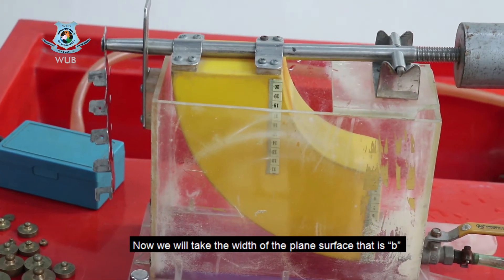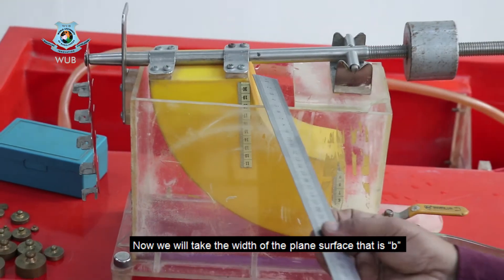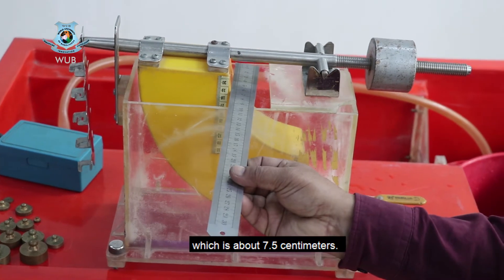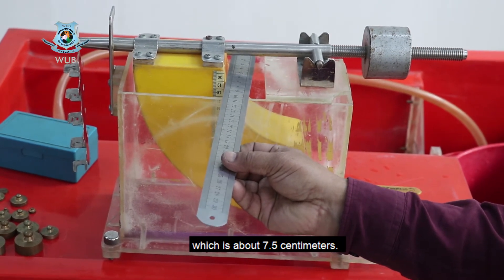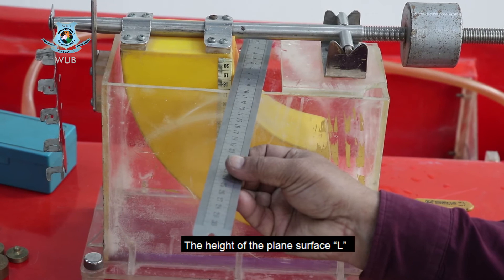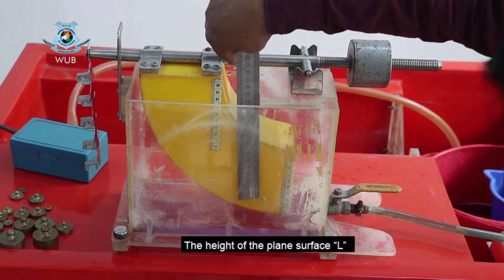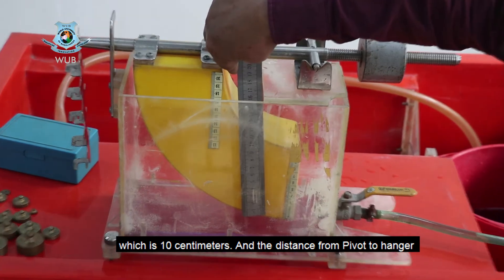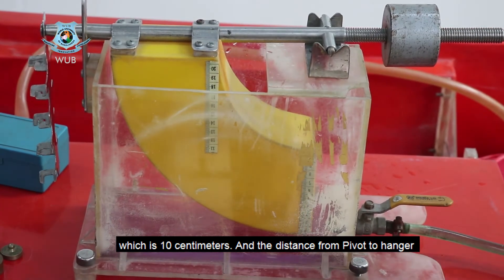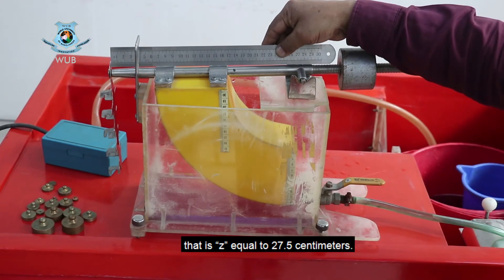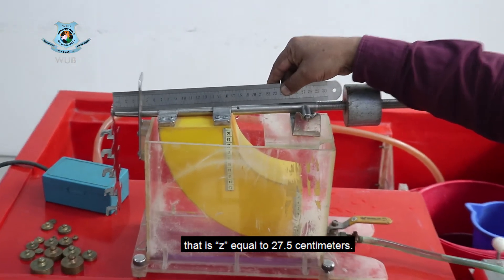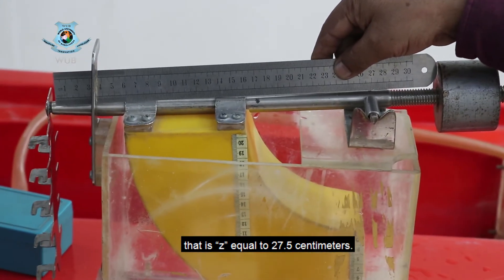Now we will take the width of the plane surface that is small b which is about 7.5 cm, the height of the plane surface capital L which is 10 cm, and the distance from pivot to the hanger that is small z equal to 27.5 cm.